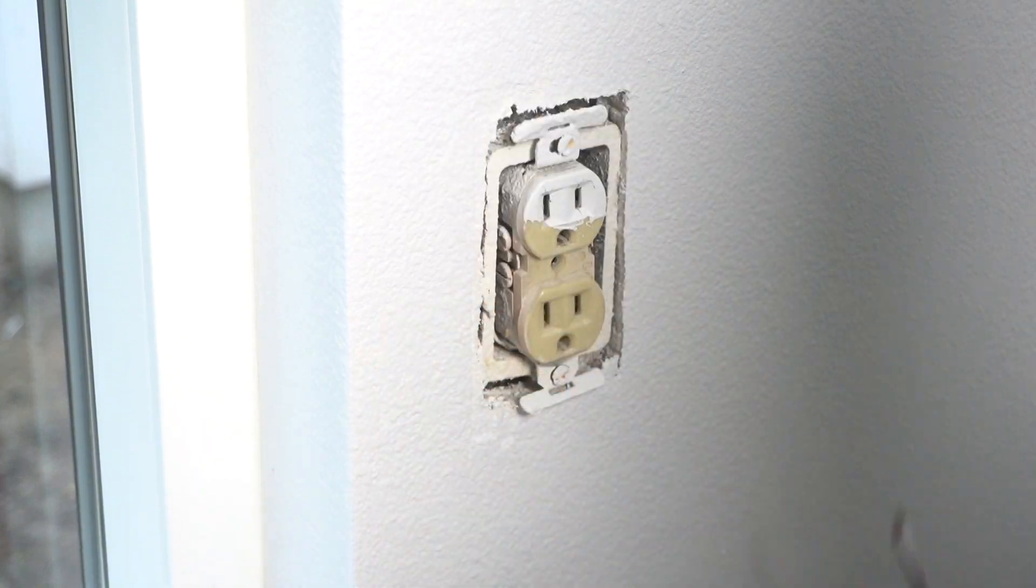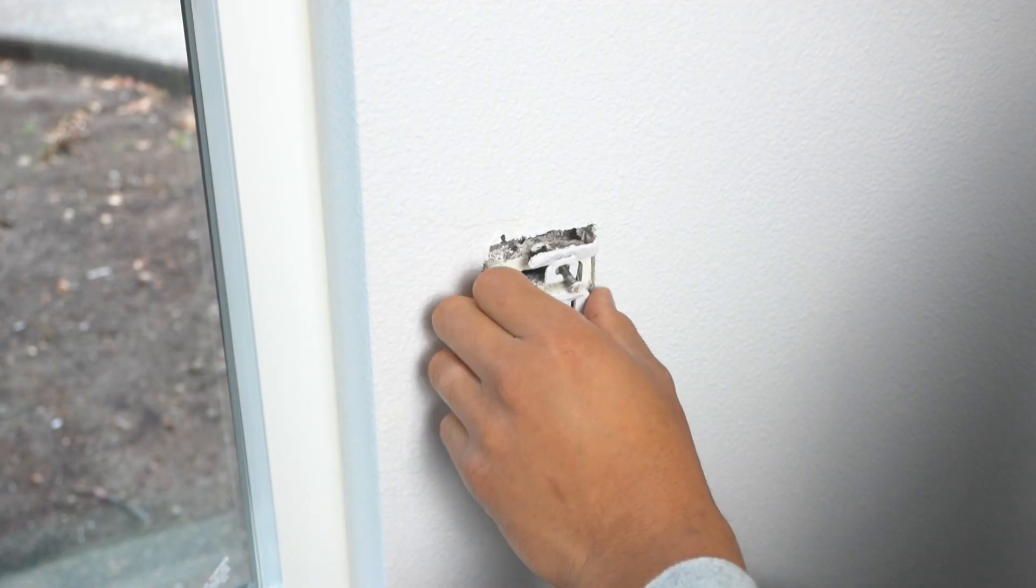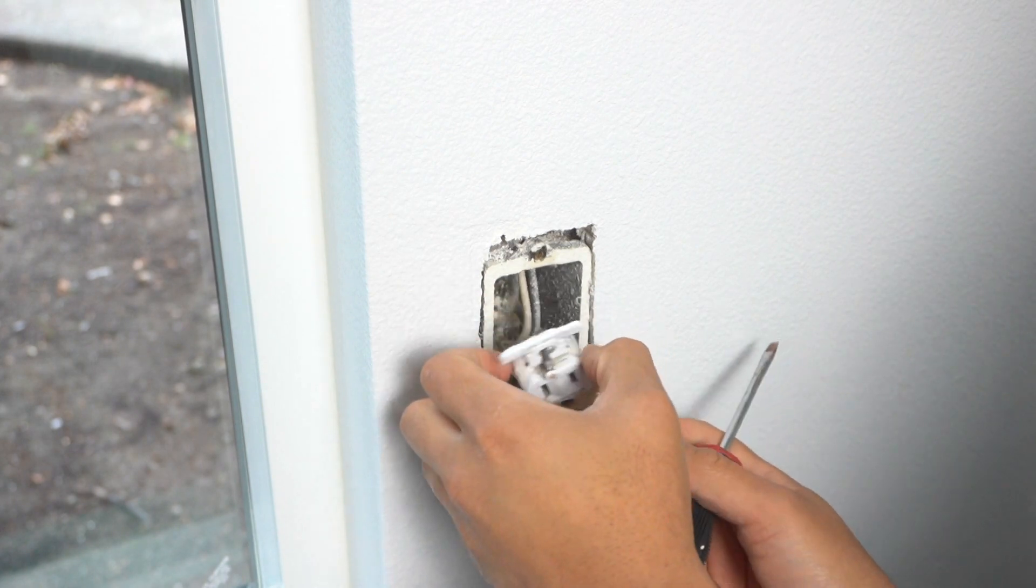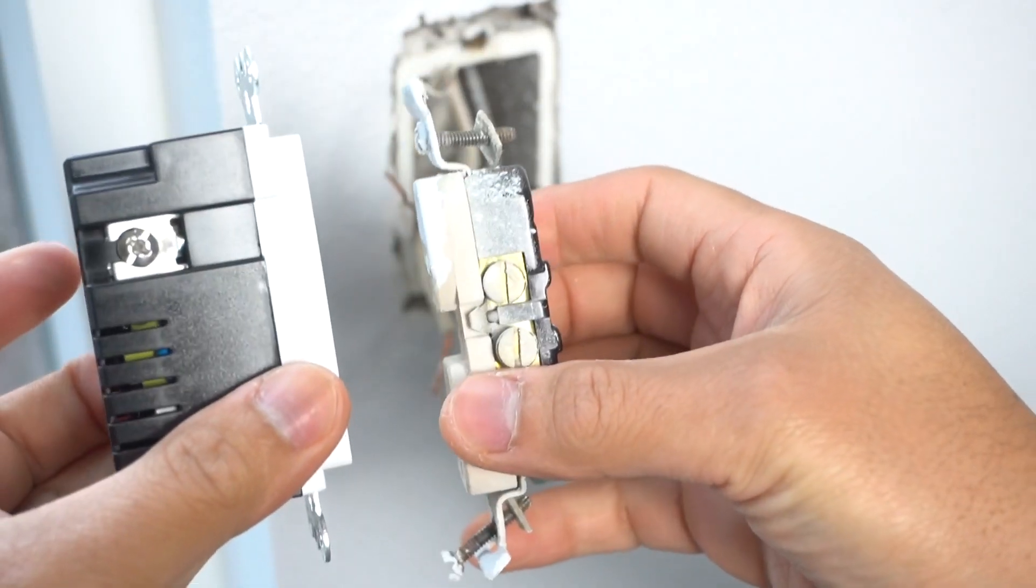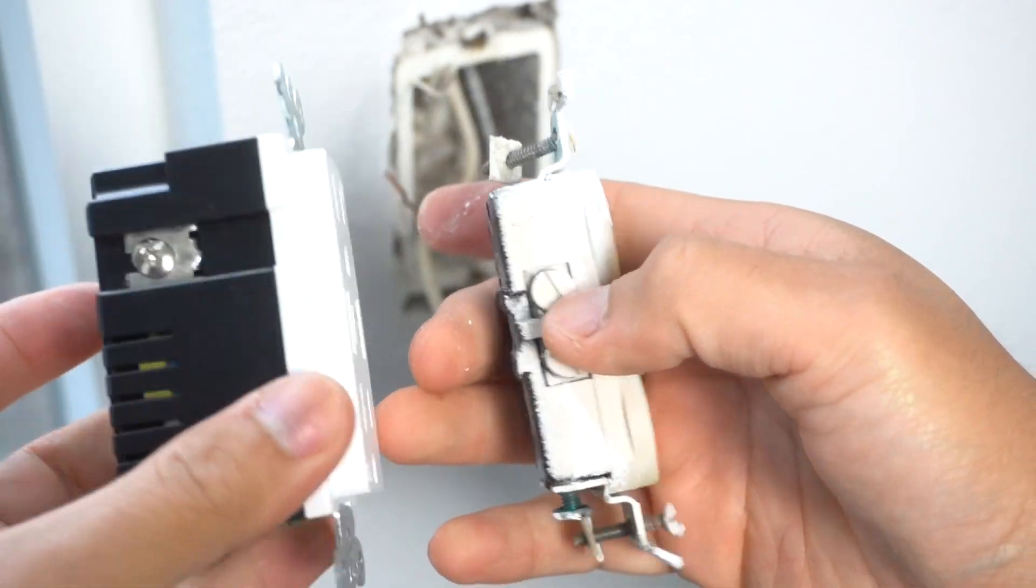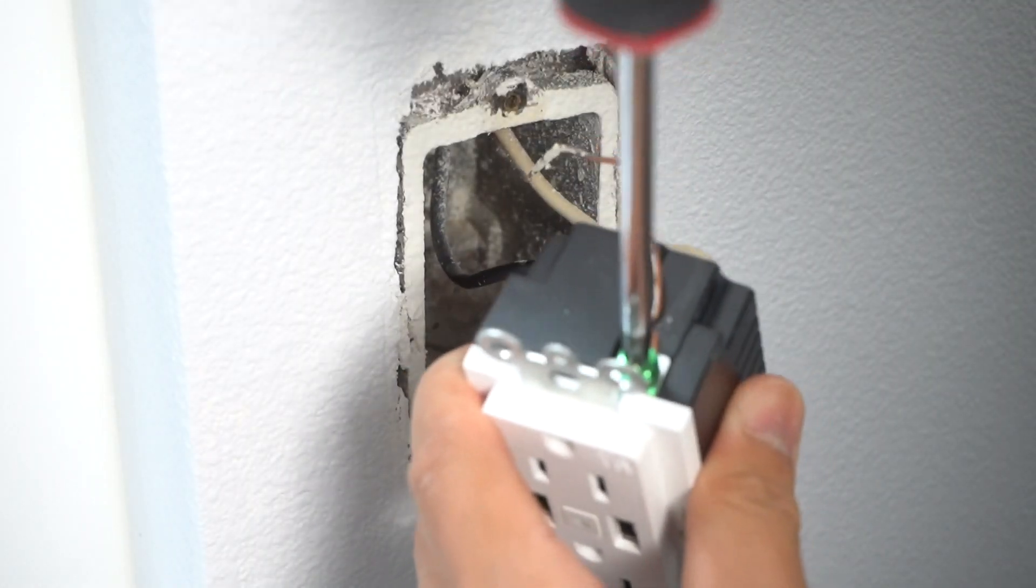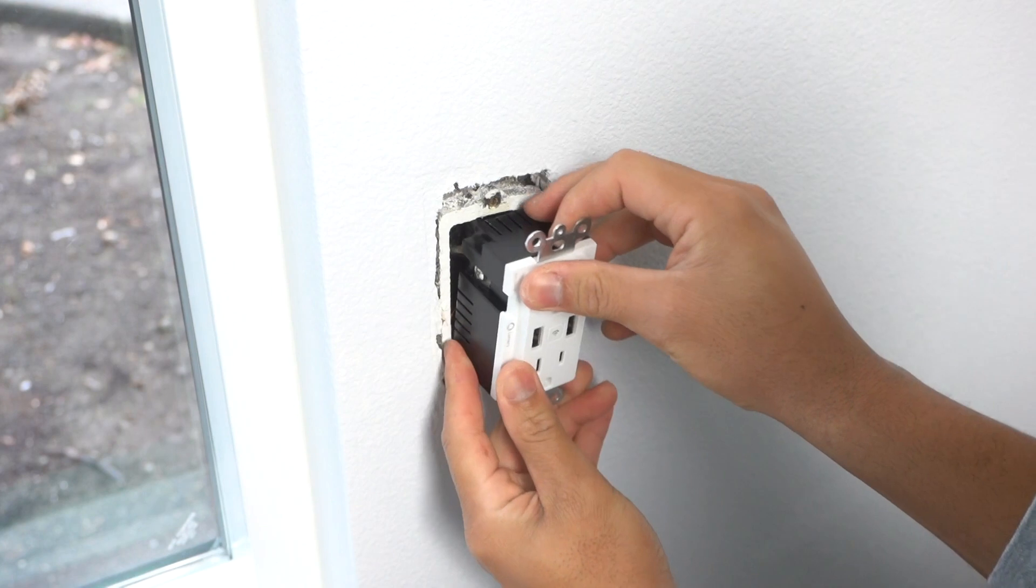Have you ever been in a situation where you want to upgrade or just change out your old outlet and you're already in the process of unwiring everything to change it out to a brand new GFCI or just like the one that you see on the left? You already started wiring it and you're in the process of inserting it into the junction box.